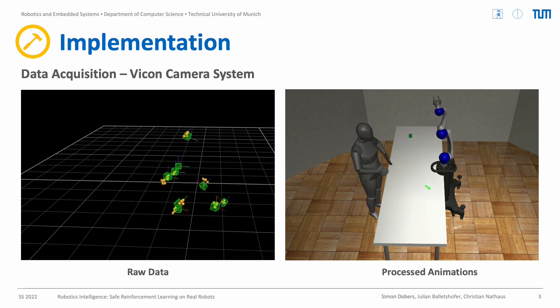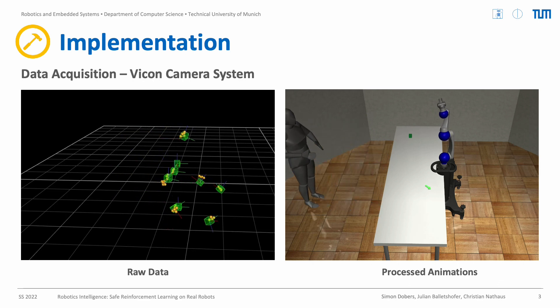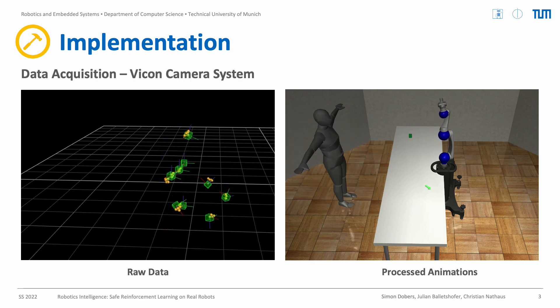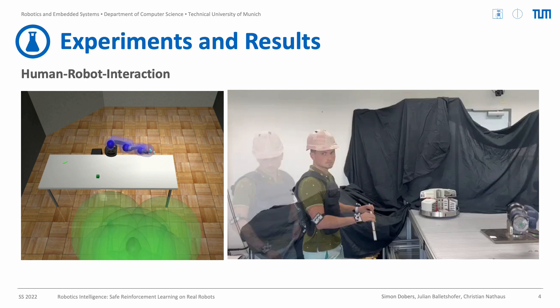In that way, the agent can learn to interact and collaborate with the human. We trained a reinforcement learning agent to reach a certain goal, marked by the green arrow which you can see in the video on the left side. During training, this agent was also provided with the human animations which we recorded, as you have seen on the last slide.